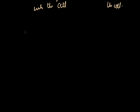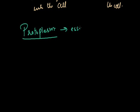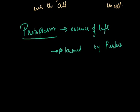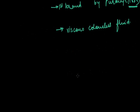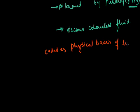Let us switch to another subtopic: protoplasm. Protoplasm is called the essence of life because it is the only living substance of which the cell is made. The term protoplasm was first given by Purkinje in the year 1839. It is a viscous, colorless fluid and a site of all physiological reactions. It is also called the physical basis of life.